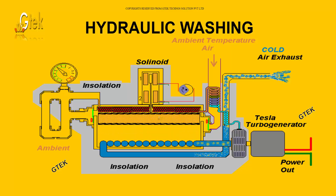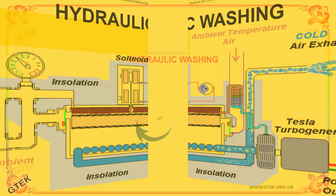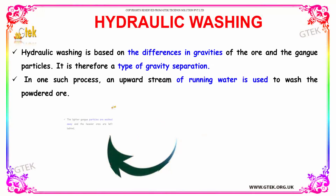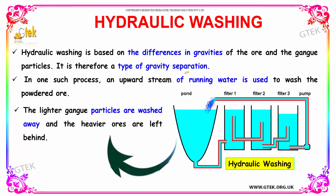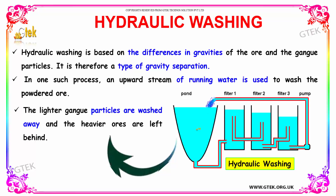Automatically the metals get separated. Hydraulic washing is based on the presence and difference in gravities of the ore and the gangue particles — it is therefore a type of gravity separation. In one such process, the upward stream of running water is used to wash the powdered ore. The lighter gangue particles are washed away and the heavier ores are left behind.